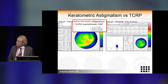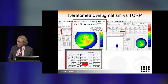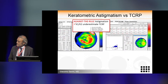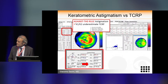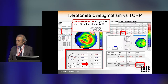Here is an example of with-the-rule astigmatism where K1 and K2 overestimate the total corneal refractive power. The K1 and K2 reading is 1.4 diopters of astigmatism, but the total corneal refractive power in the third row gives 0.6 — a difference of almost one diopter. The opposite occurs with against-the-rule astigmatism, going from 1.9 diopters on the anterior surface to 2.8 diopters in total corneal astigmatism, which makes a real difference when selecting the toricity of the IOL.